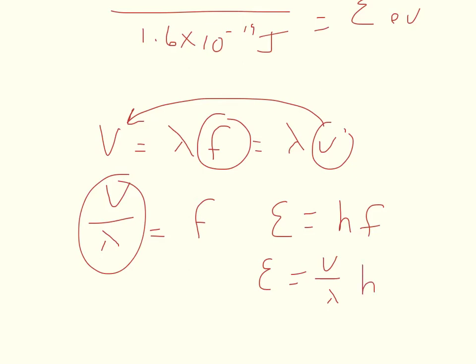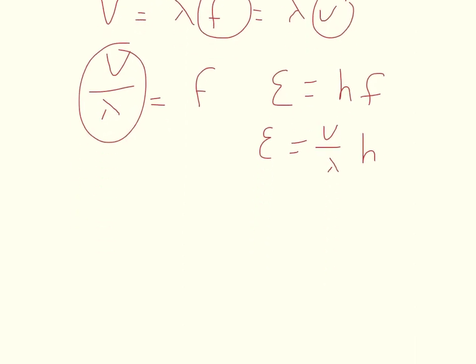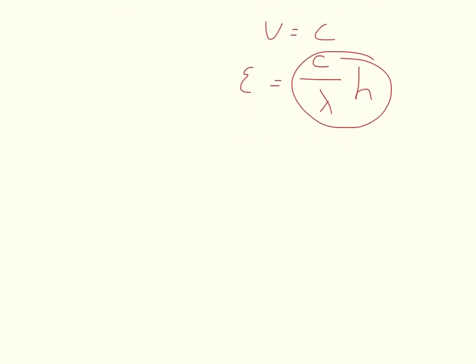And we're making one assumption, we're assuming that V is the speed of light, which depends on if light's traveling through a vacuum or through some other medium, but we'll say that V equals C, and so energy is equal to C over lambda times H.